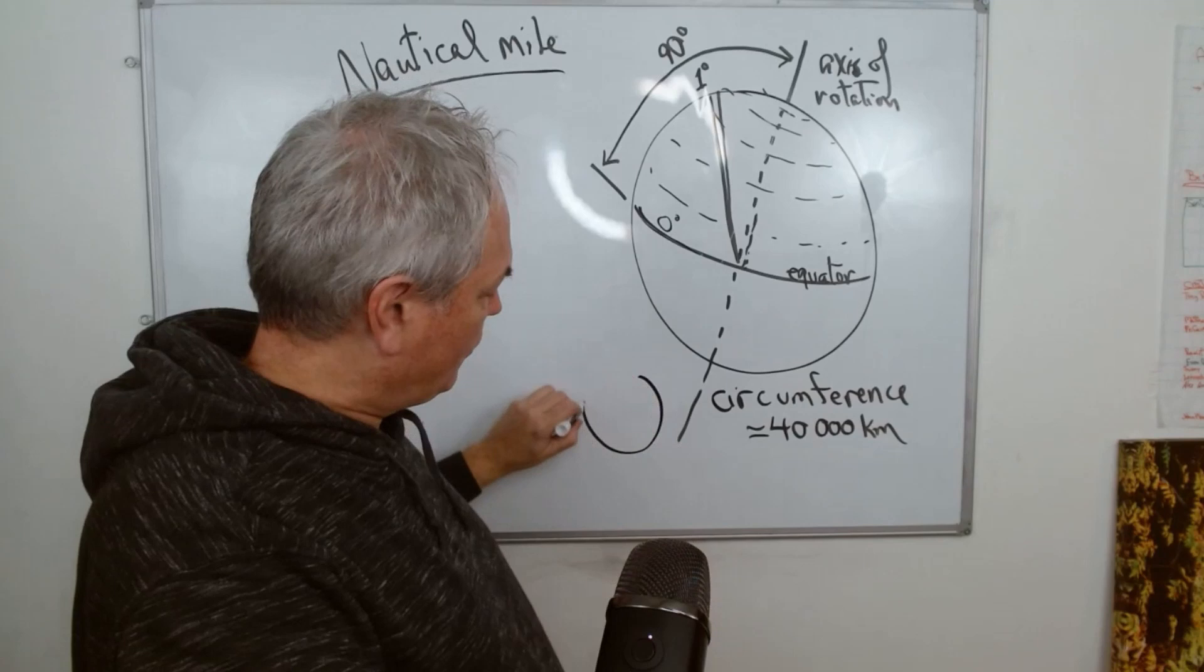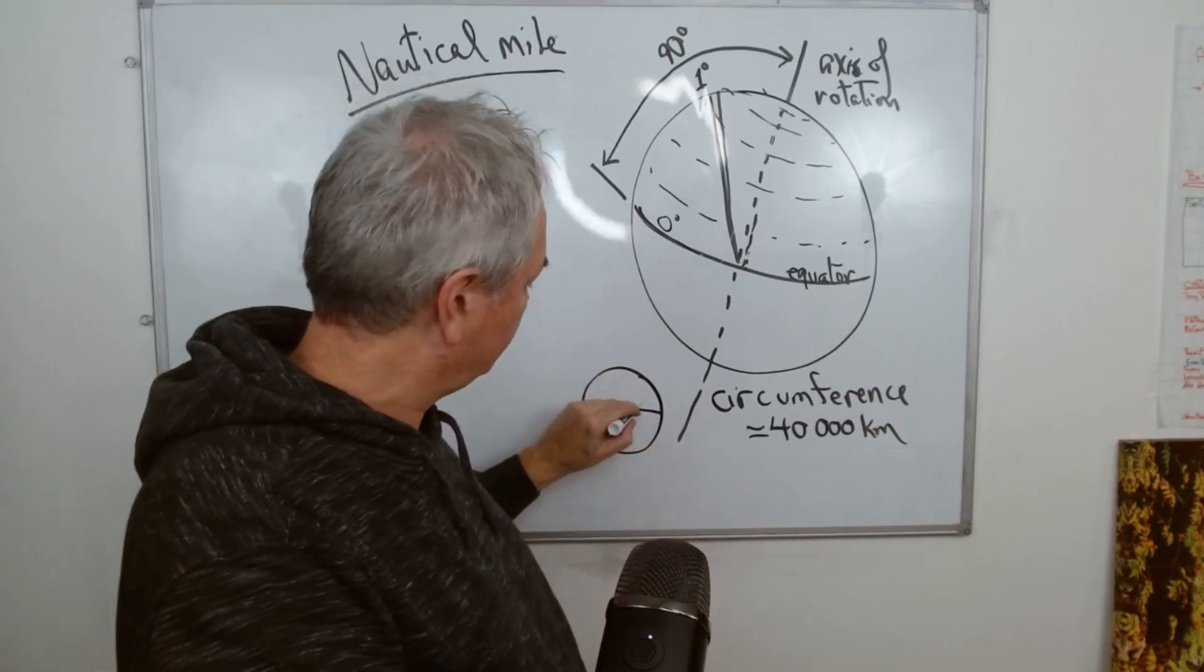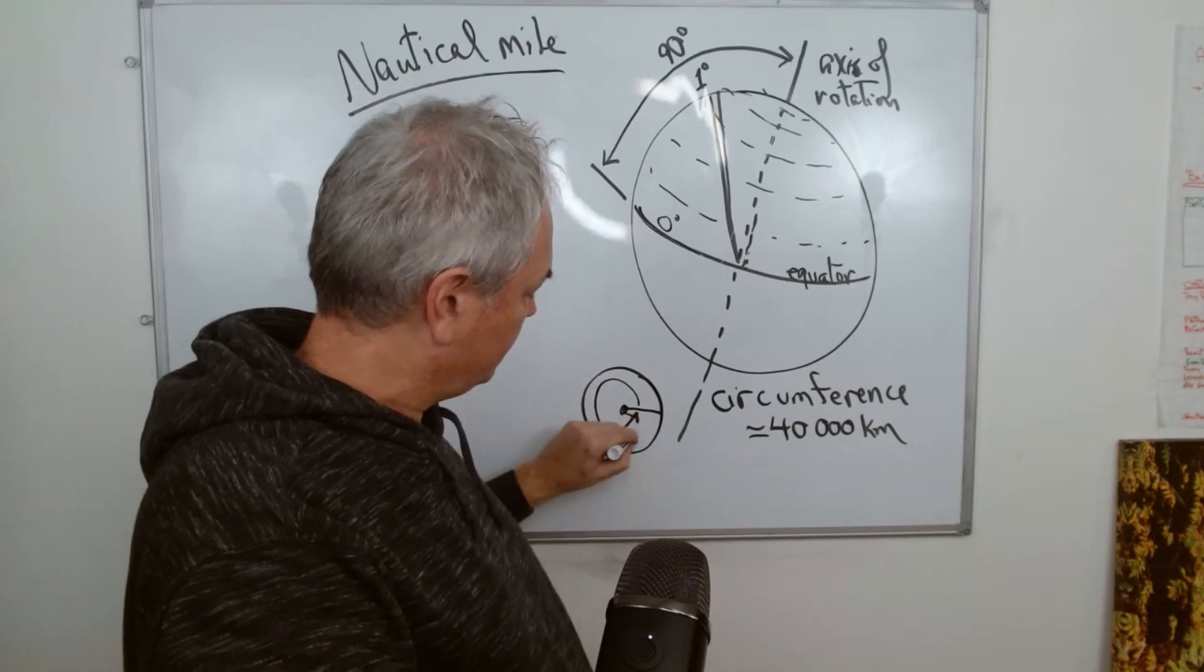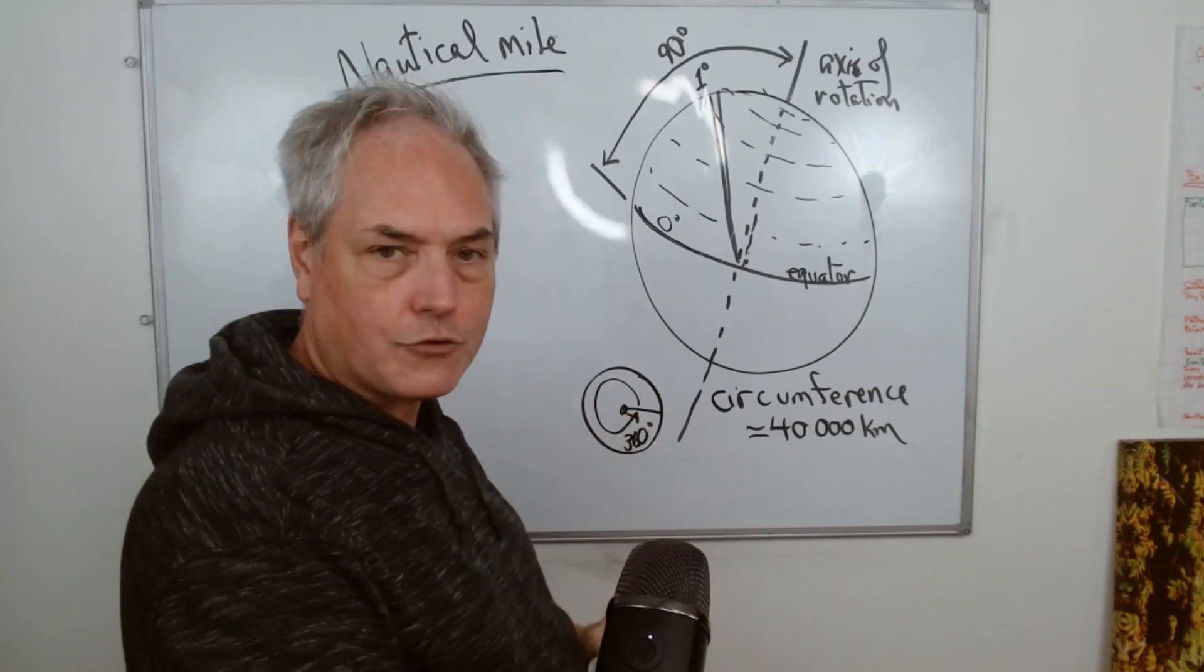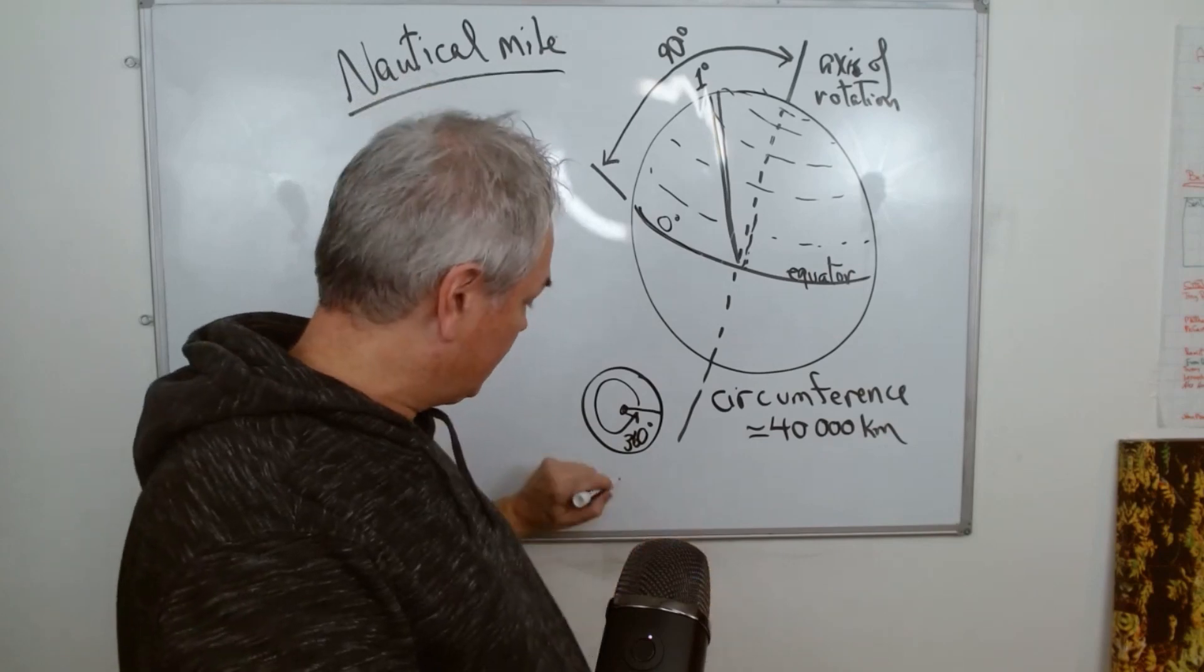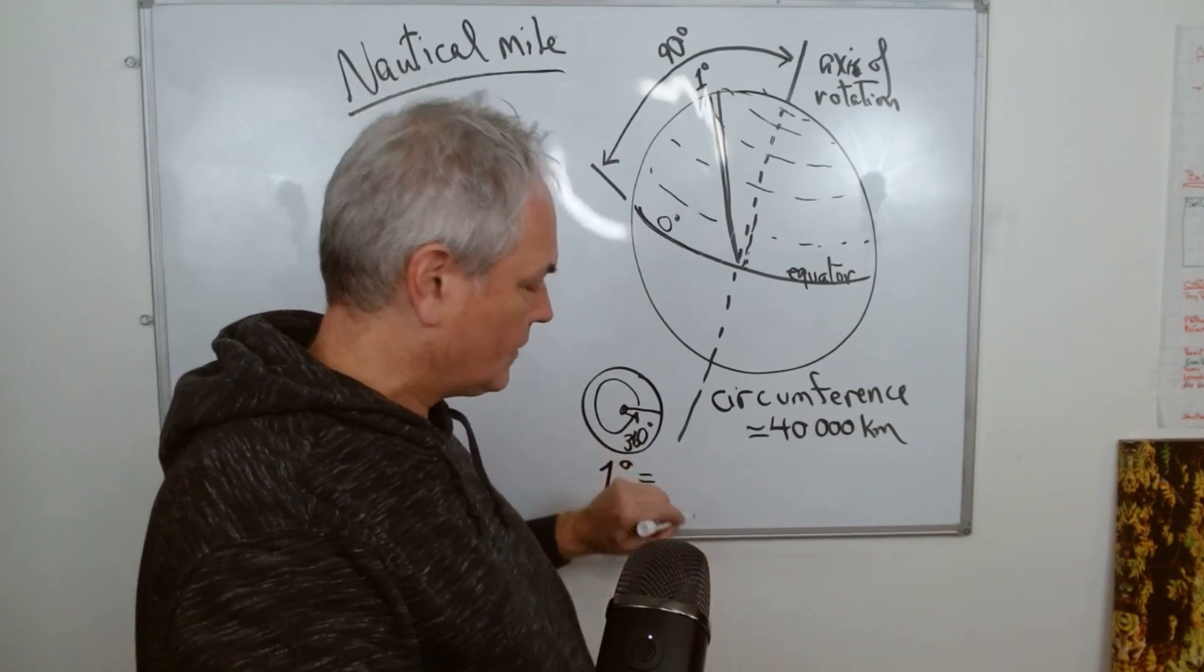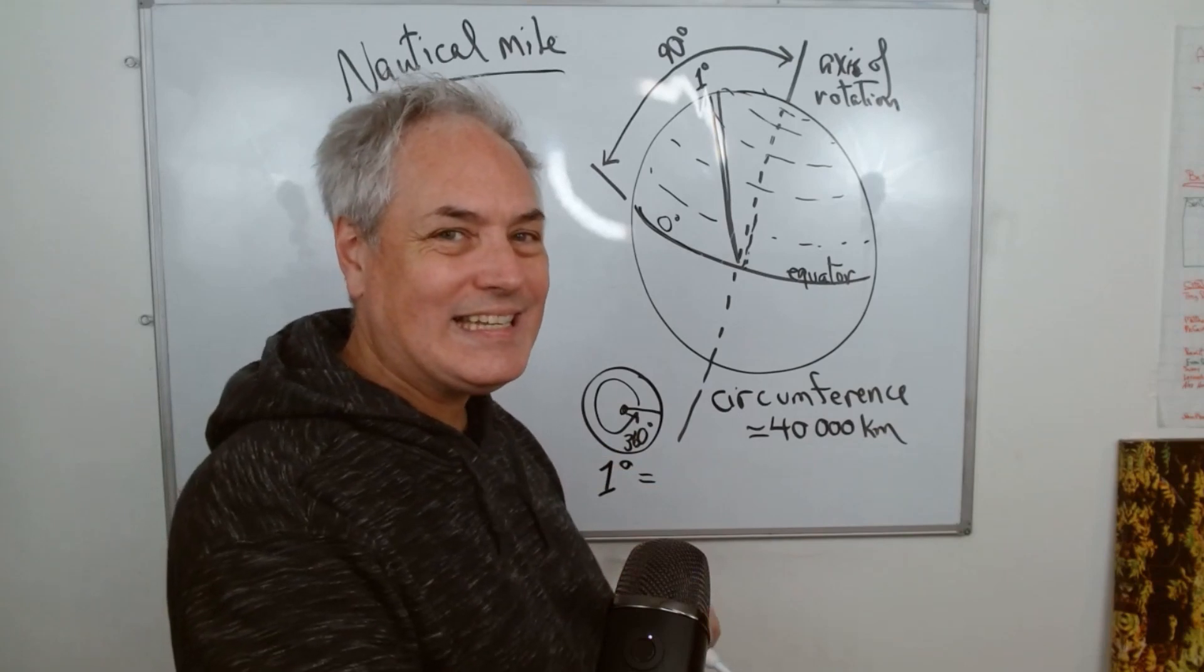For the same reason, if you have a circle like this and you go from this point, you have 360 degrees. Now on top of that, we have to keep in mind that in one degree we have what we call 60 minutes.